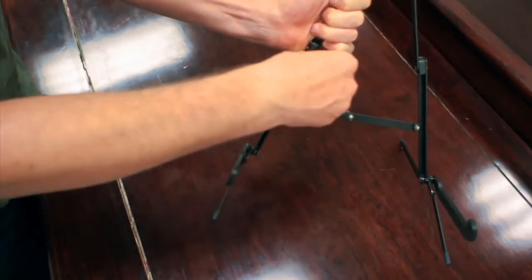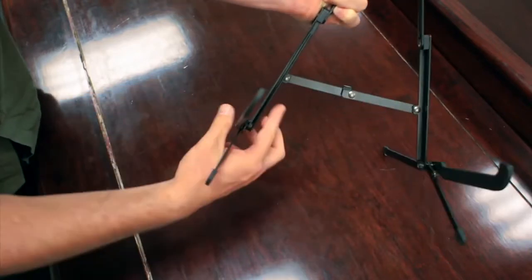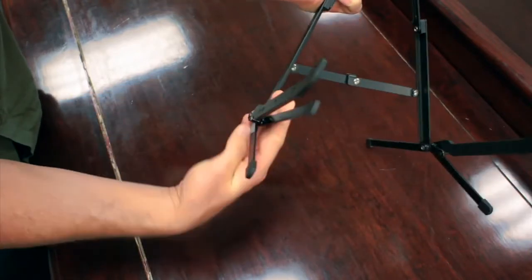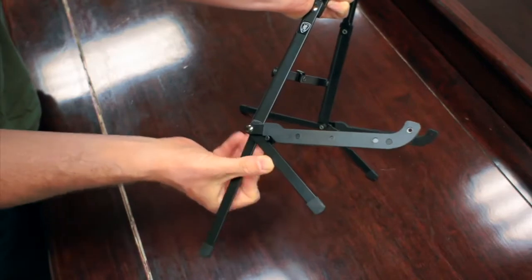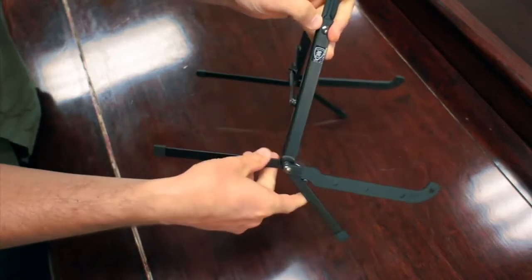Then once again, the inner leg. You might have to keep this supported, but fold the inner leg all the way around until it stops at that notch in the back.